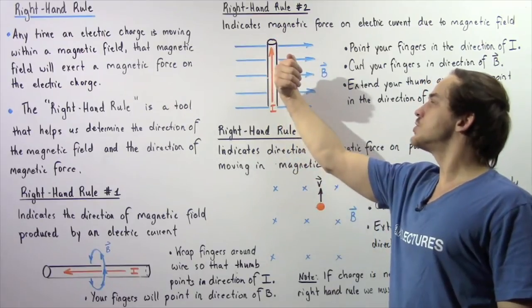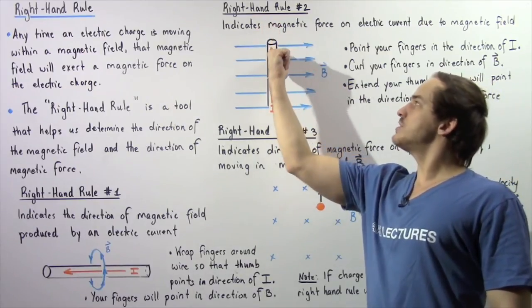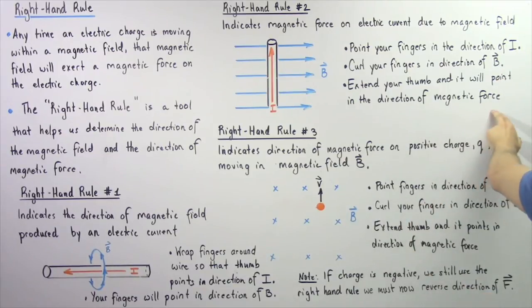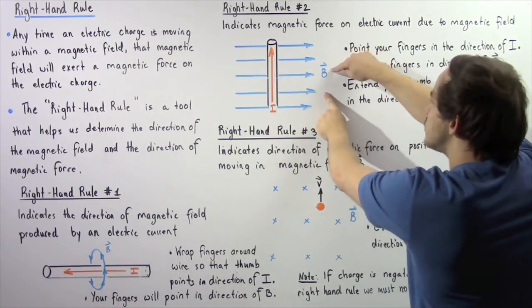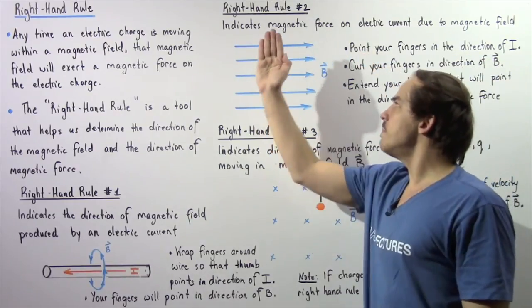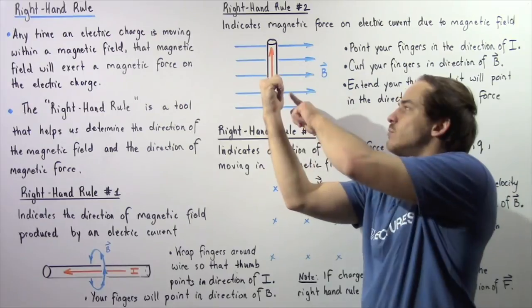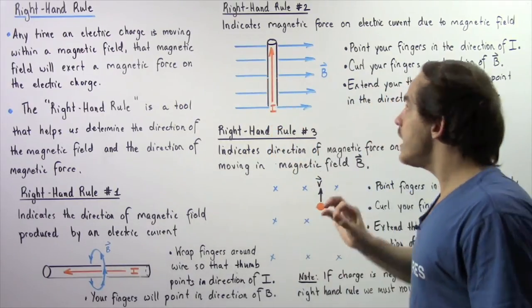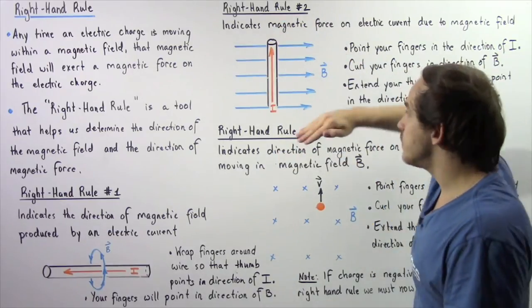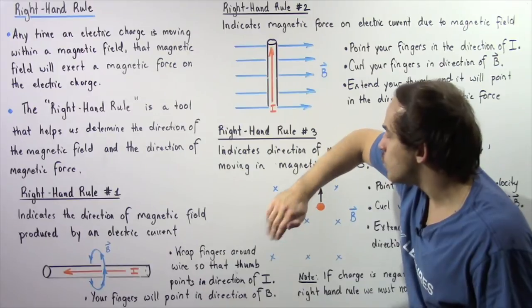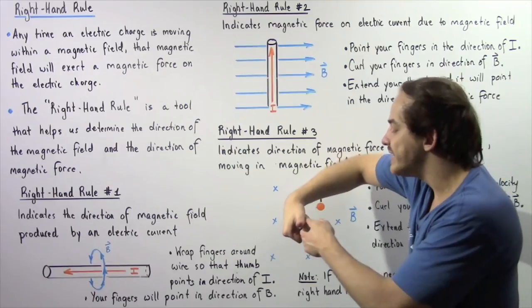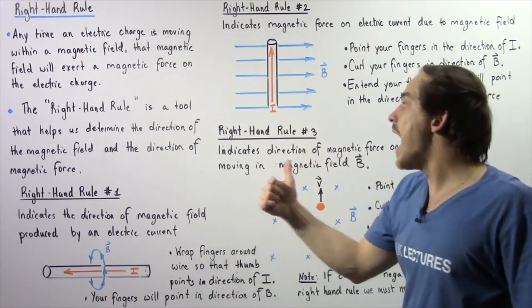We curl our fingers in the direction of the magnetic field, then extend our thumb, and the thumb points in the same direction as our magnetic force acting on the wire. So: point fingers up, curl toward the magnetic field, extend the thumb — and the force points into the board, into the page. Now if our electric current was reversed, we simply point downward, curl our fingers in the same direction, extend our thumb, and the force will point in the opposite direction — out of the board.